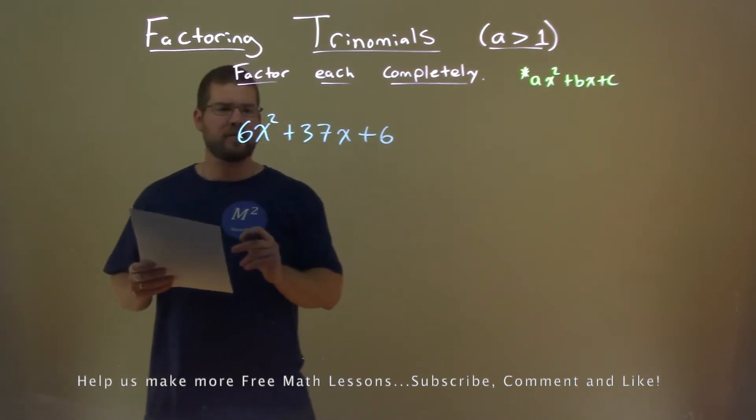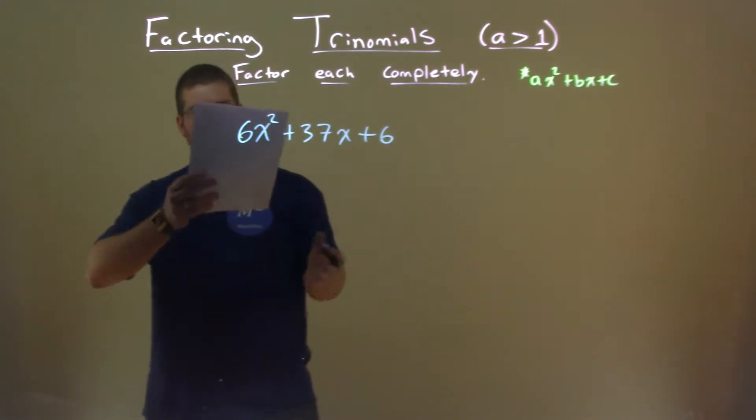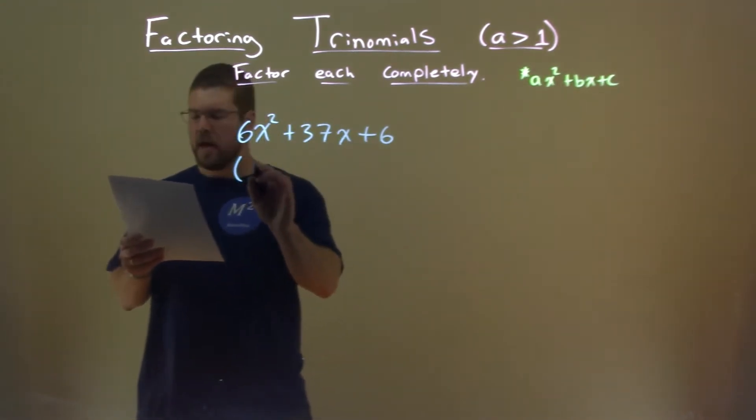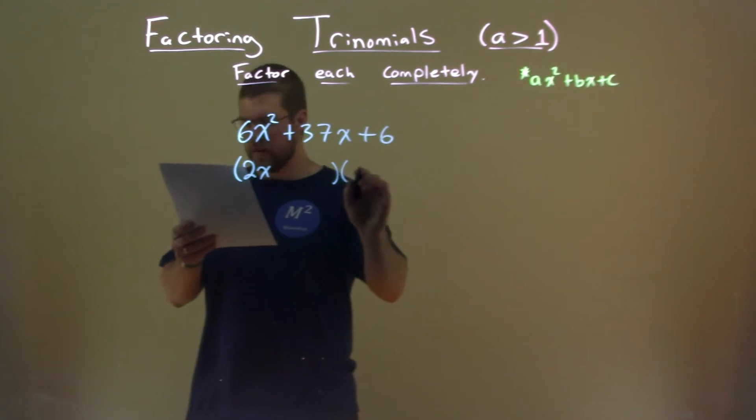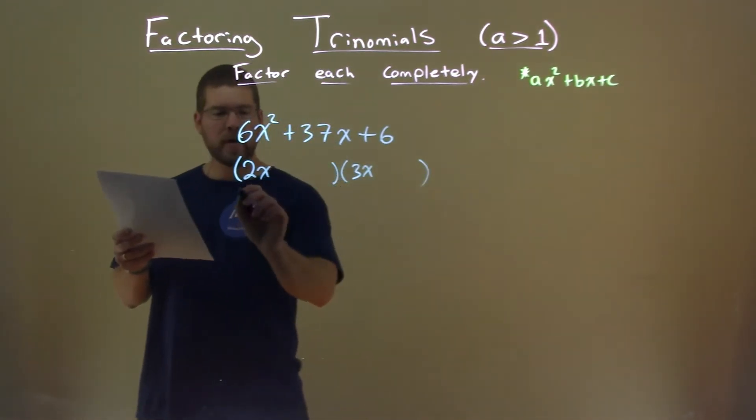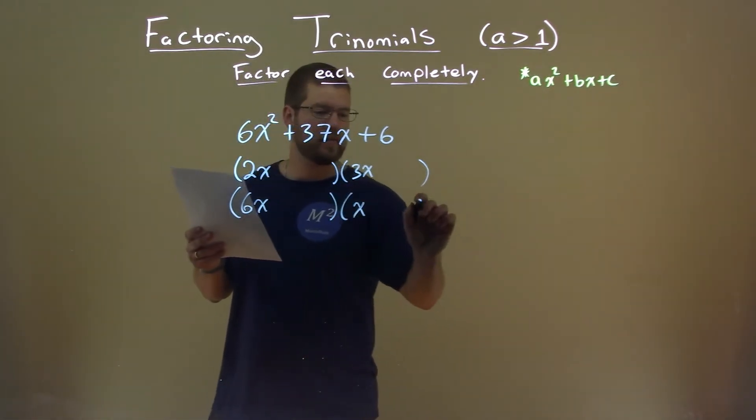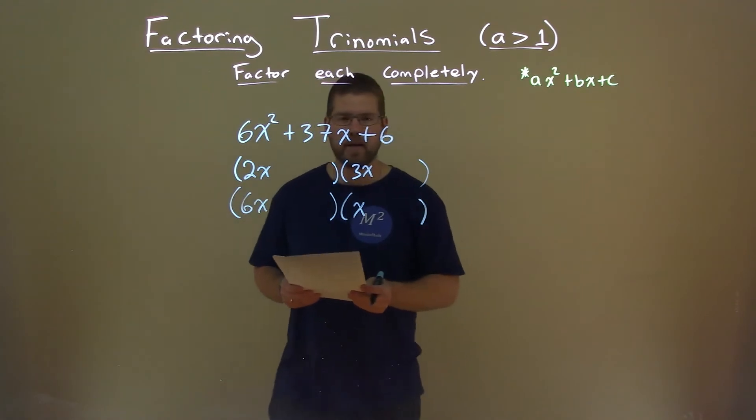Well, let's look at the 6x squared. That lets us know we have two options for what our problem can look like. It can be 2x times 3x here, because that gives us 6x squared, or it can be in some form of 6x times 1x. So those are our two base forms that we need to keep in mind here.